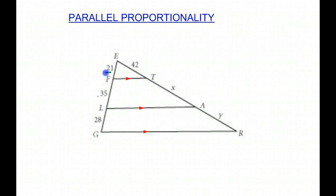So 21 matches up with 35 and the corresponding is 42 and X. So what we're going to say is 21 over 35 will equal 42 over X. And then we multiply by cross-multiplying.